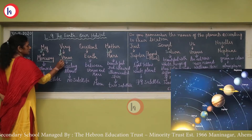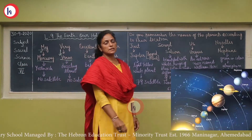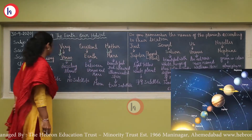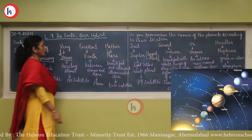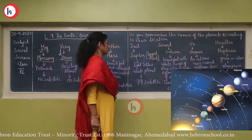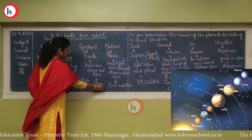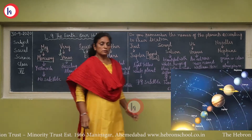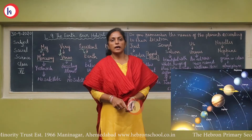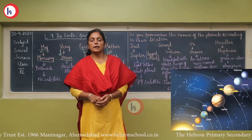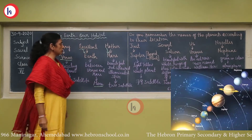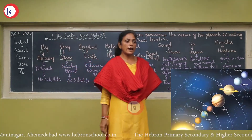V is for Venus — it is a dazzling planet, so bright you cannot look at it for long. It has no satellite. E is for Earth — it lies between Venus and Mars, has only one satellite which is the Moon, completes one rotation on its axis in 24 hours, and completes one revolution around the sun in 365 days.